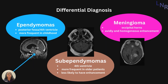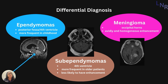Differential diagnoses for central neurocytomas include ependymomas, subependymomas, meningiomas, amongst others. Ependymomas are usually seen in the posterior fossa or fourth ventricle, and these are more frequent in childhood. Here is an example with the blue line pointing towards the ependymoma.